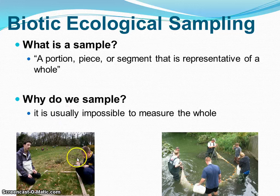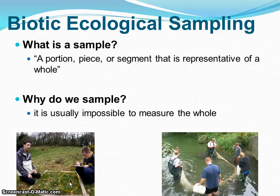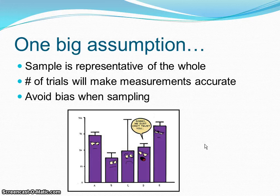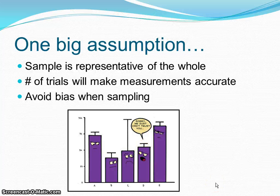So going back to the field example, this team would have randomly had to select their area. They can't decide, 'I like this area best, so I'm going to measure only this spot.' And when we're graphing, we're going to deal with these assumptions by using error bars. When error bars overlap too much, that means the sample is probably not as reliable as we wanted, and maybe we needed more trials.